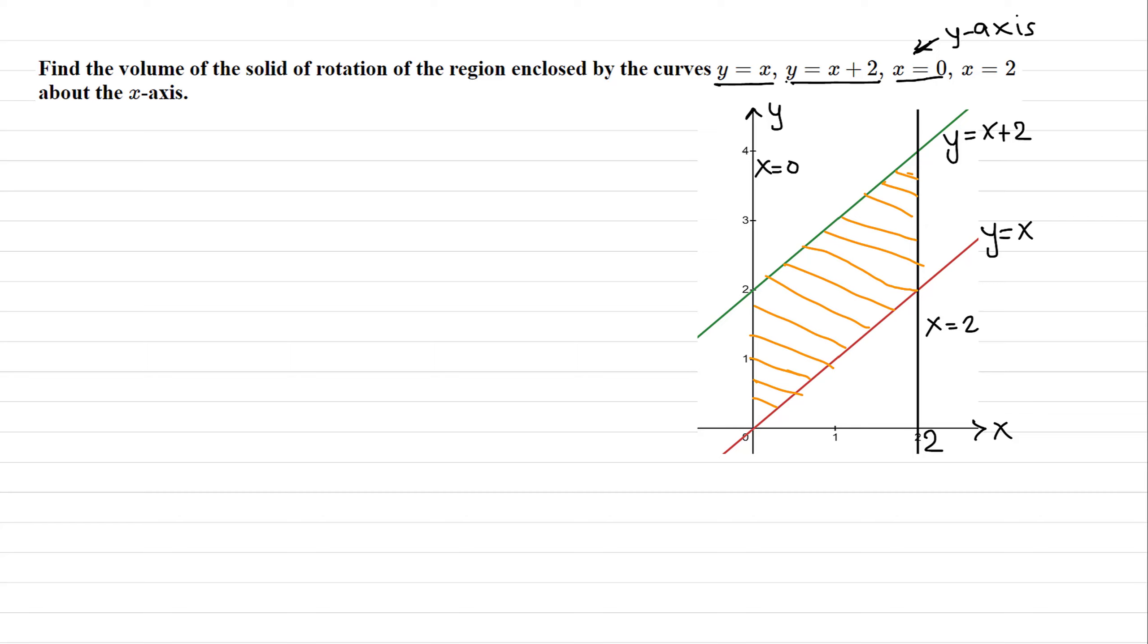This region is being rotated about the x-axis. When we rotate this region, we get a solid. The question is what is the volume of the solid? The volume is given by the integral from a to b—in our case from 0 to 2—of the area of the sample cross section in terms of x.